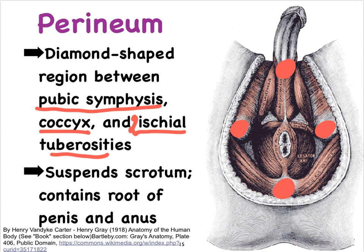We've finished looking at the testes with the epididymis as well as the ductal system in the male, so we're now ready to move on to studying the sex glands that help produce the seminal fluid.